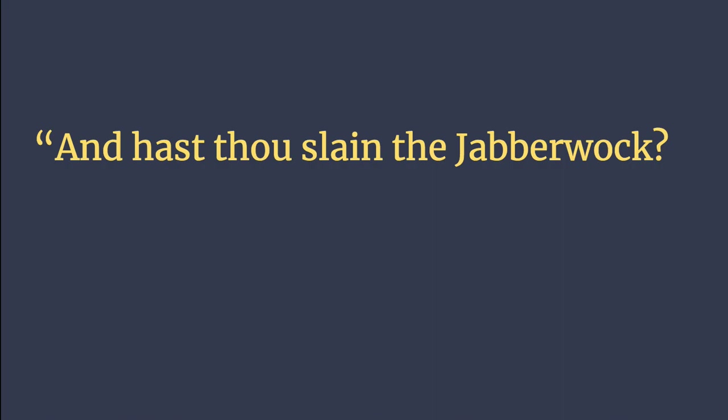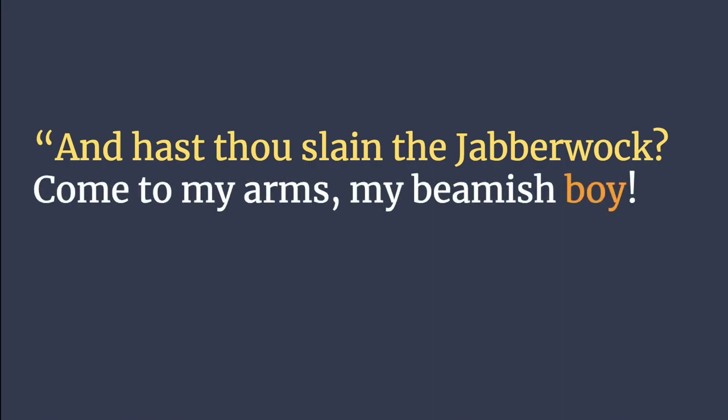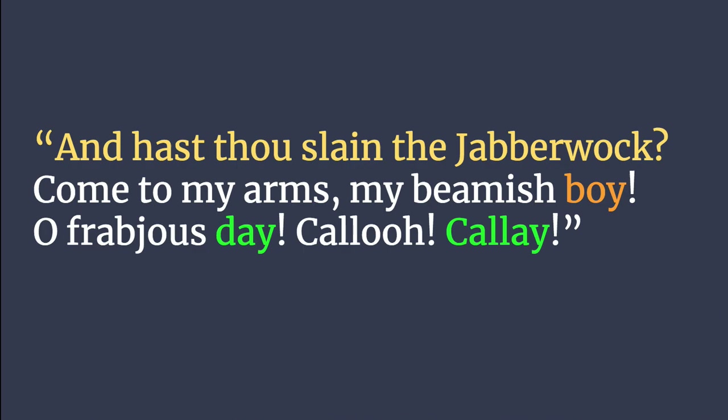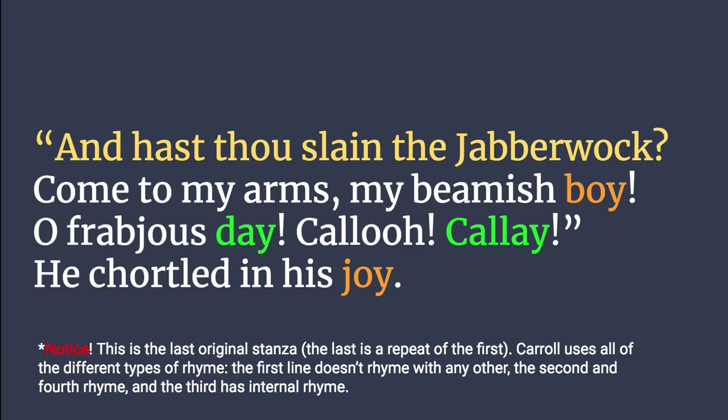And hast thou slain the jabberwock? Come to my arms, my beamish boy! O frabjous day! Callooh, callay! He chortled in his joy. Notice this is the last original stanza. Lewis Carroll uses all the different types of rhyme. The main point of the poem is the father telling the son to go kill the jabberwock, and the boy going off and doing it — this is the culmination. Then boy rhymes with joy — the second and fourth lines rhyme. And then 'O frabjous day! Callooh, callay!' has internal rhyme.